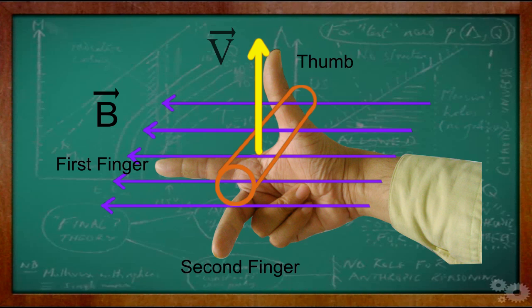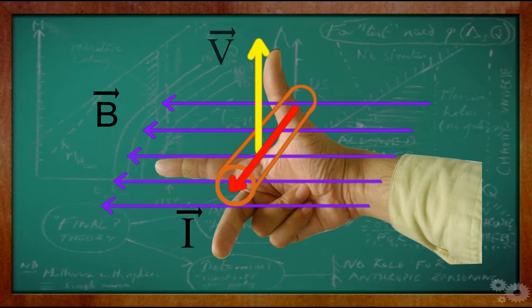Then the second finger represents the direction of the induced or generated current, i.e. the direction of the induced current will be the direction of conventional current from positive to negative.